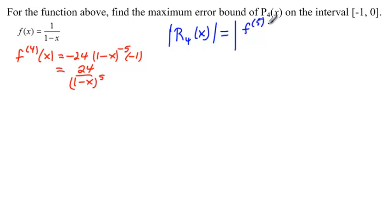So really it's the next term, if you will. The fifth derivative of f at some value of z, some value of x which we're going to call z, over 5 factorial times x minus 0, or just simply x to the fifth. This value of z is somewhere between x and the value that we centered about, which was 0.